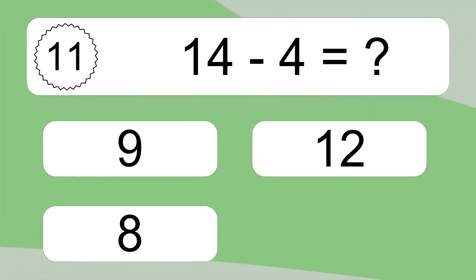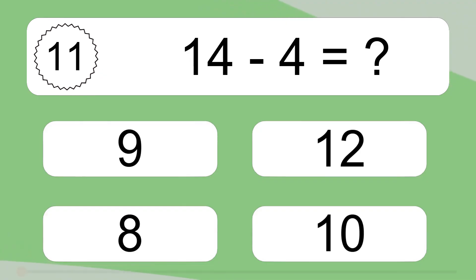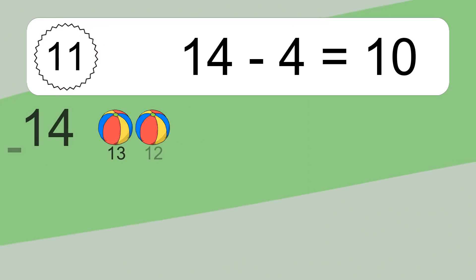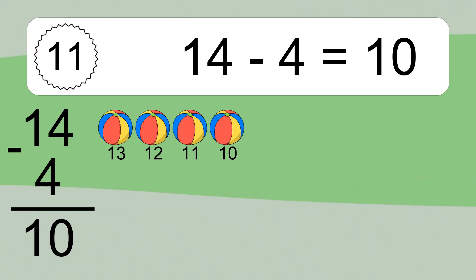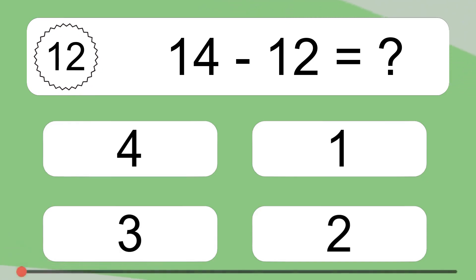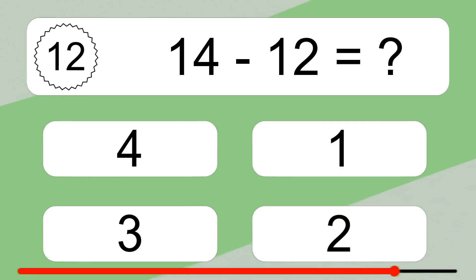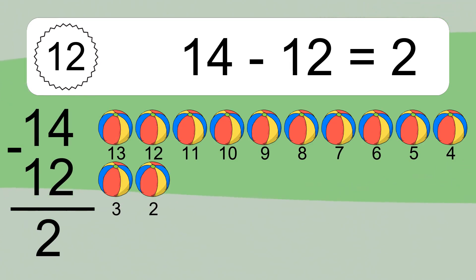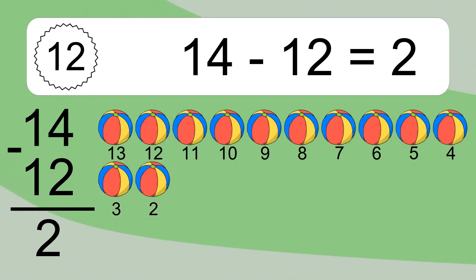14 minus 4 equals what? 14 minus 4 equals 10. Let's count it: 13, 12, 11, 10. 14 minus 12 equals what? 14 minus 12 equals 2. Let's count it: 13, 12, 11, 10, 9, 8, 7, 6, 5, 4, 3, 2.